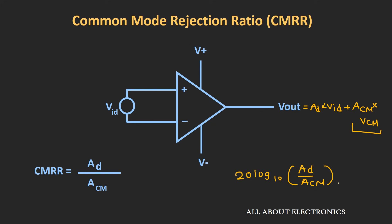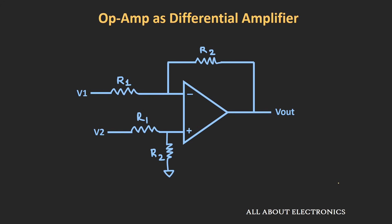Usually this parameter is defined for the open-loop configuration, and in fact the discussion carried out so far is also for the open-loop configuration. But in practical cases, this op-amp is used as a differential amplifier in a closed-loop configuration. The value of common mode rejection ratio listed in the datasheet for the open-loop configuration can be used approximately for the closed-loop configuration, and using this we can find the common mode output voltage present at the output terminal.